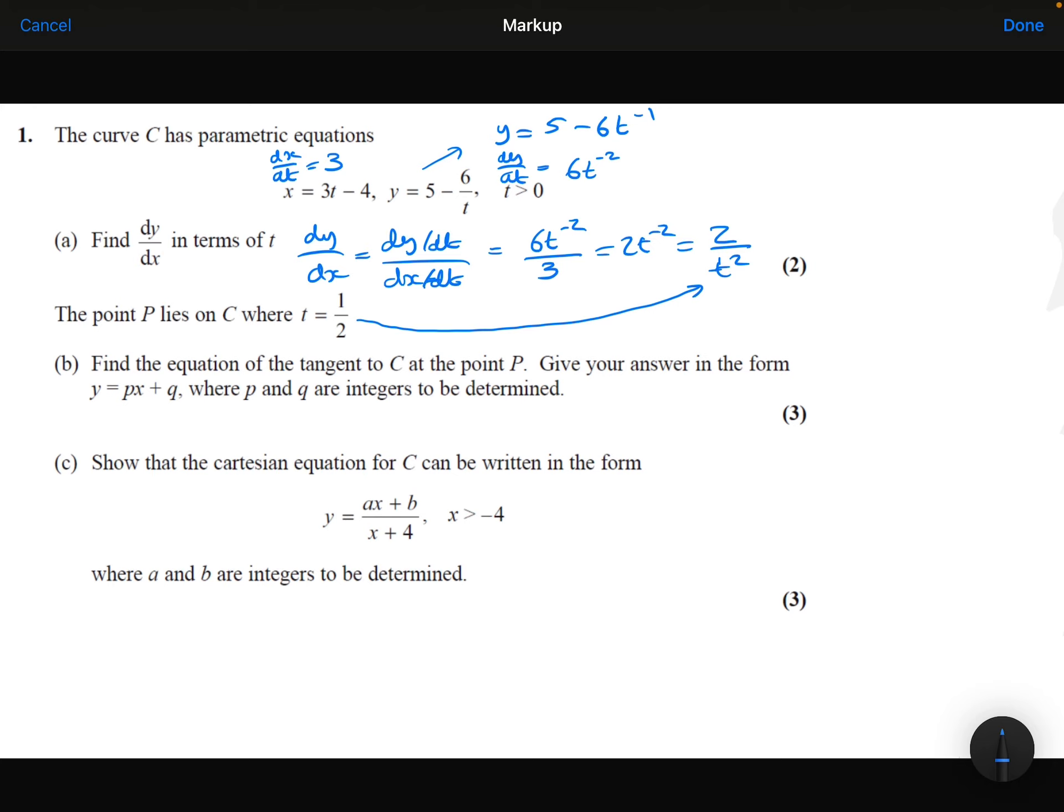So if we substitute one-half into this, we get 2 over one-half squared, which is 8. So the gradient of our curve, and so the gradient of the tangent at point P is 8. So y equals 8x plus c.